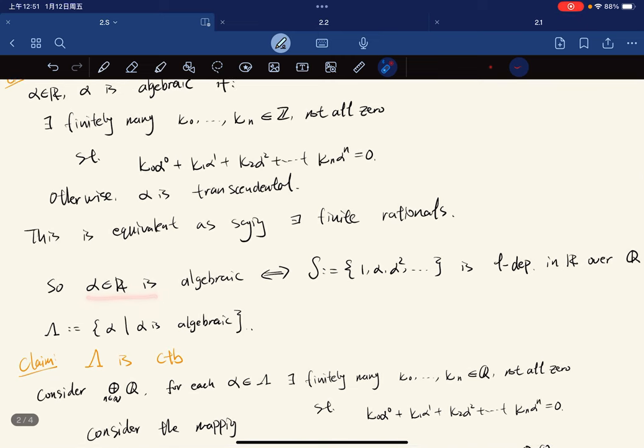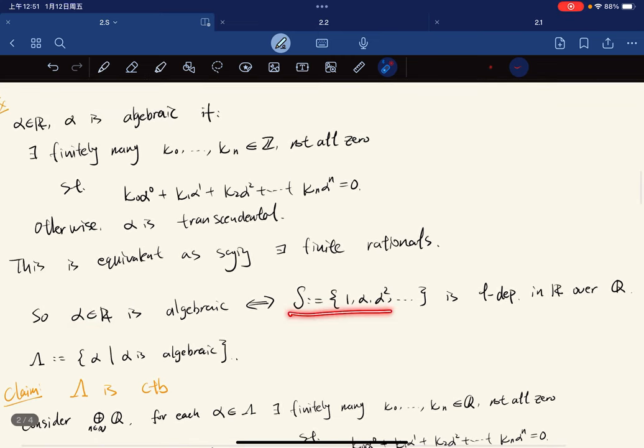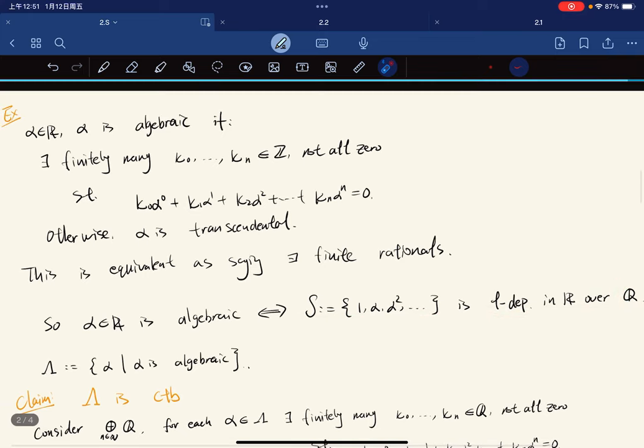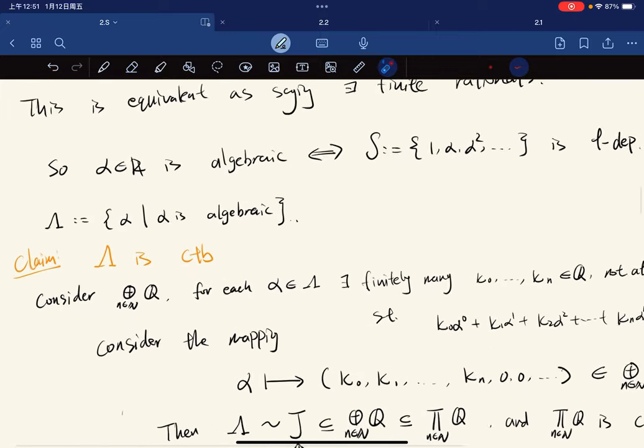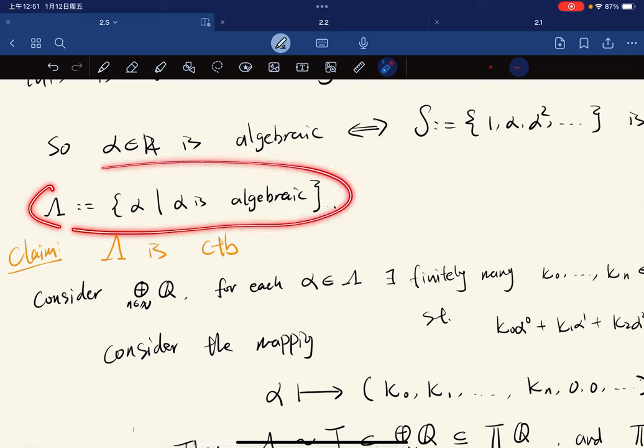By definition of linearly dependent, we let this denote the set of all algebraic numbers. The claim is that it is countable. The set of all algebraic numbers are countable.